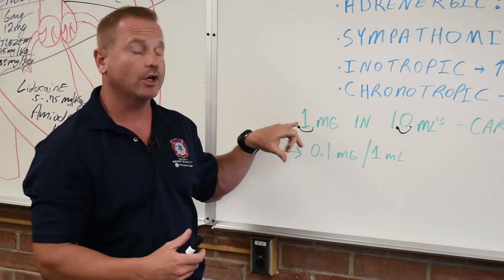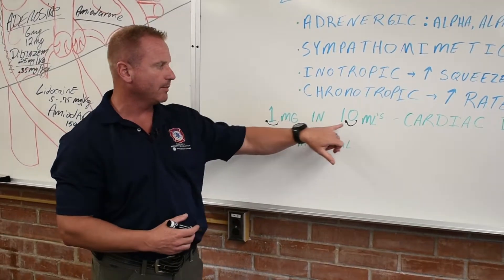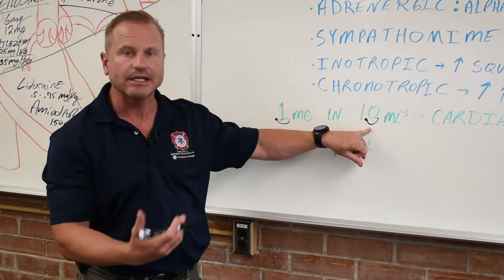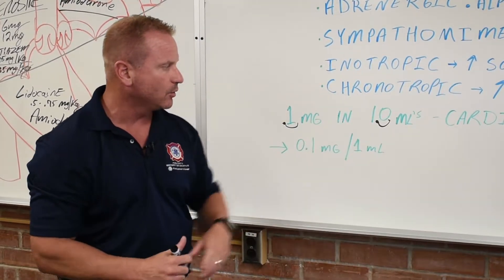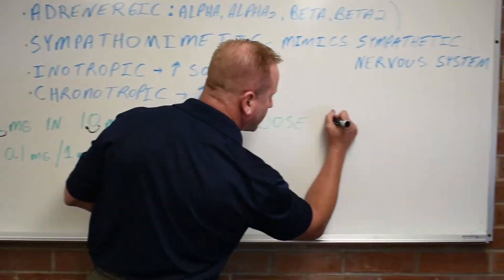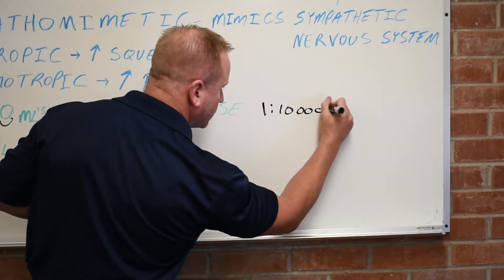Most of the vials, well, all the vials will tell you what the concentration is. So the cardiac dose of epinephrine is 1 milligram in 10 mls or 10 cc's. Mls and cc's are interchangeable. And what that equals, that is the concentration of 1 to 10,000.